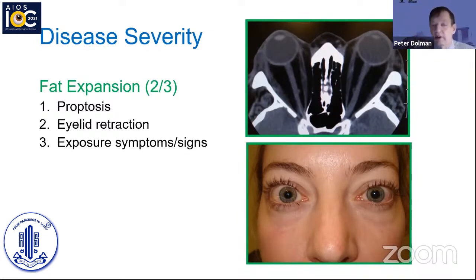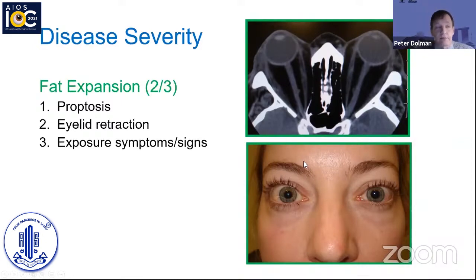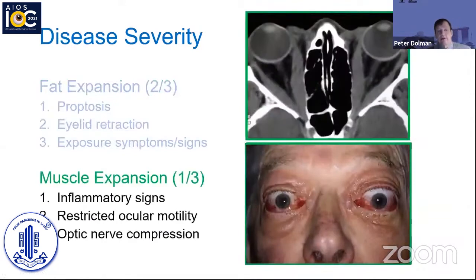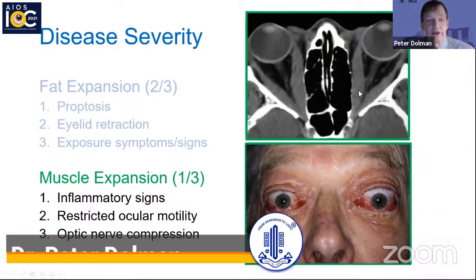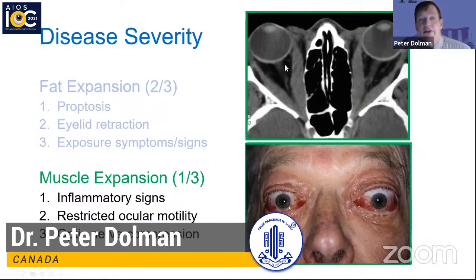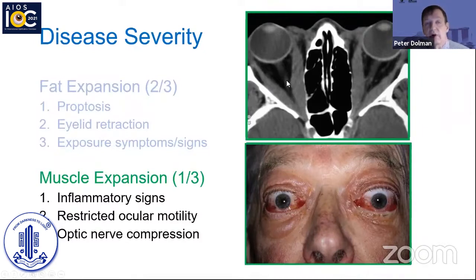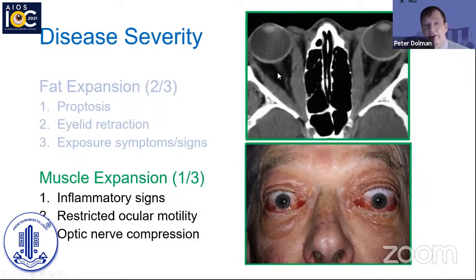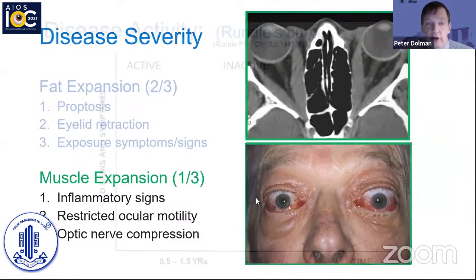Two-thirds of patients have primarily orbital fat expansion with potential levator muscle tightening causing eyelid retraction, proptosis, and exposure symptoms and signs. These patients are usually young, have a very indolent onset without much soft tissue congestion or inflammation, and are not necessarily smokers. At the other end of the spectrum are those more severely affected functionally — patients with one or more extraocular muscles enlarged and inflamed. Swelling of these muscles can lead to congestion of orbital venous drainage and restriction in motility.